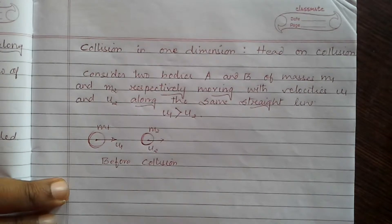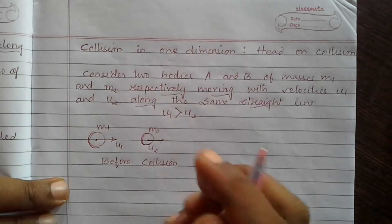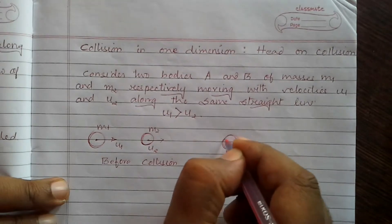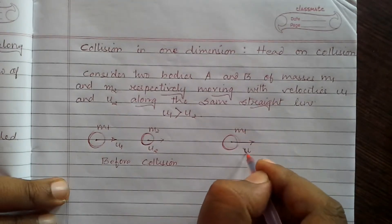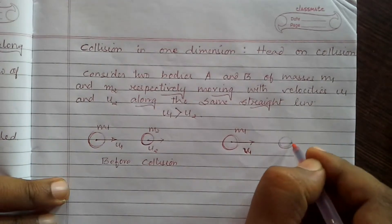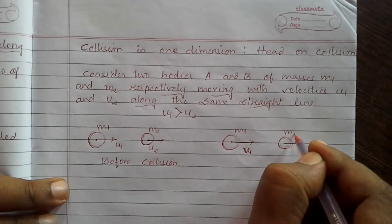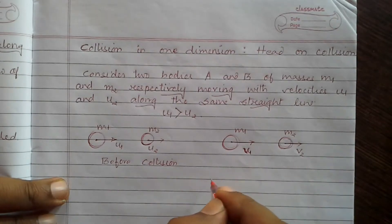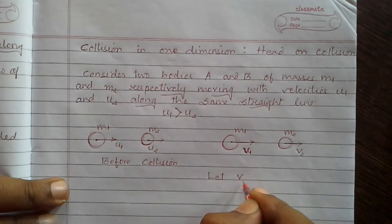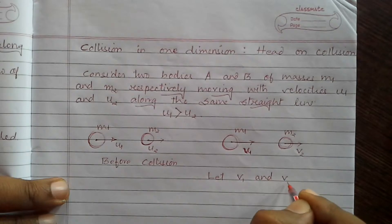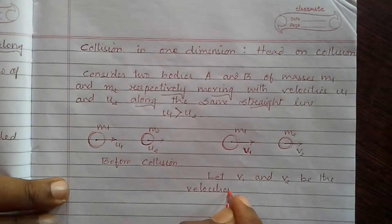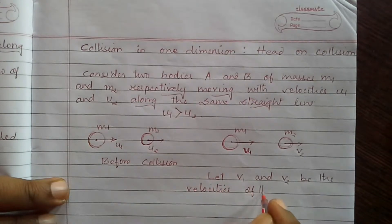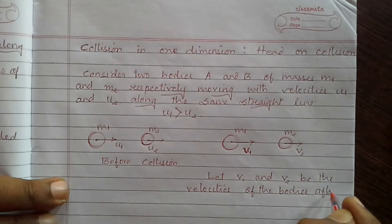Let the velocities be V1 and V2 for the bodies after the collision. We will illustrate the diagram: this is mass M1, now moving with velocity V1, and this is mass M2 moving with velocity V2. So let V1 and V2 be the velocities of the bodies after collision.